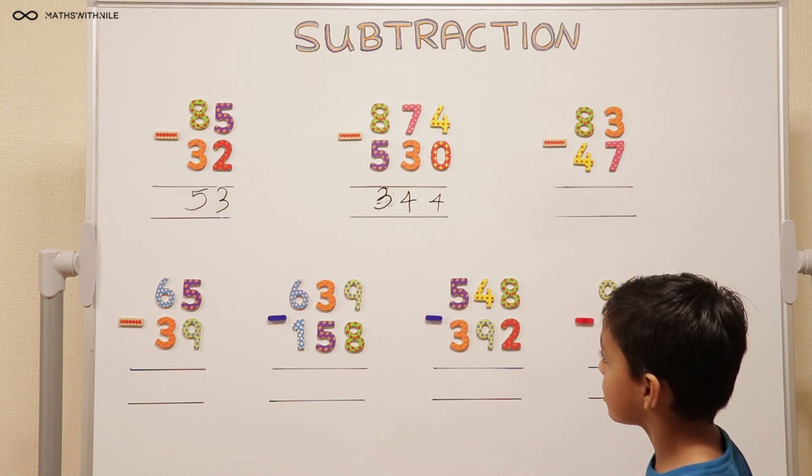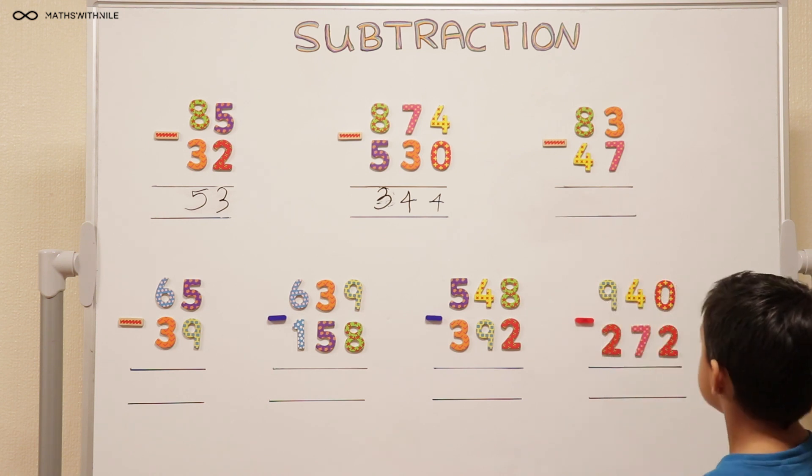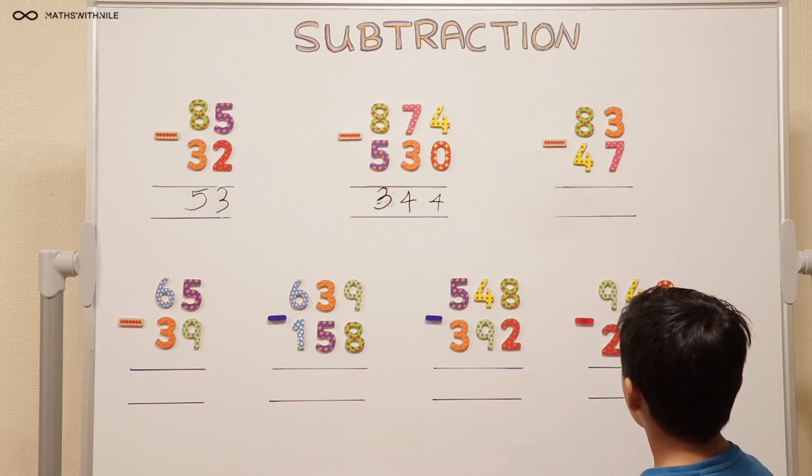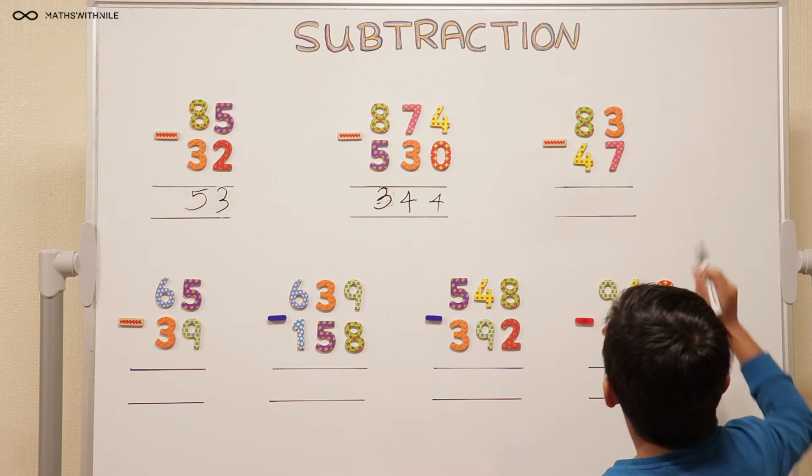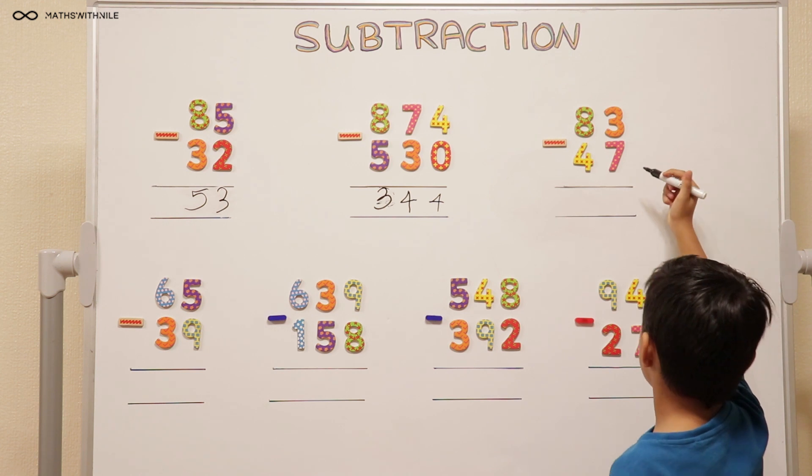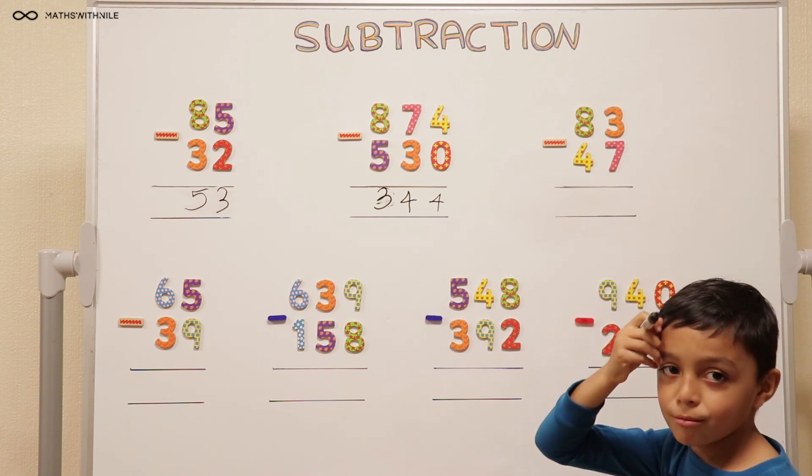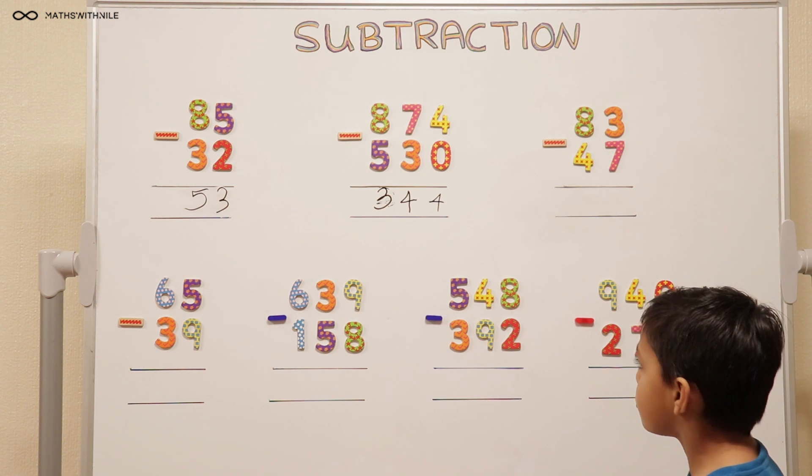Now it gets interesting with the next question. Let's read it out and have a look. 83 take away 47. So we start with the units like always. 3 take away 7. That doesn't work.